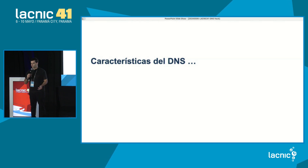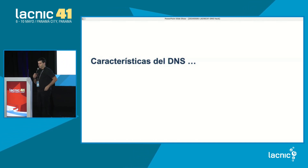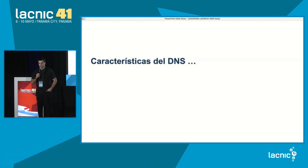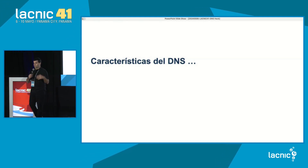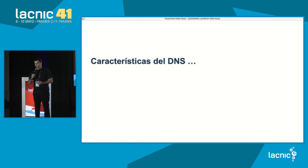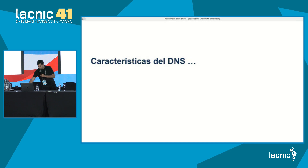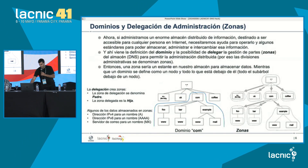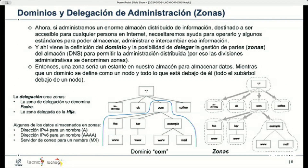Internet pasó de ser unas pocas máquinas conectadas en algunas universidades de Estados Unidos a ser lo que tenemos hoy en día. Obviamente un sistema con un archivo que haya que transferir a todos los dispositivos es absolutamente no escalable, tiene un montón más de problemas. Eso motivó la generación de todos los estándares que componen lo que conocemos hoy como sistema de nombres de dominio. El DNS es una gran base de datos distribuida: está distribuida espacialmente —los datos no están concentrados en un único servidor sino dispersos en varios en todo el mundo— y también administrativamente.